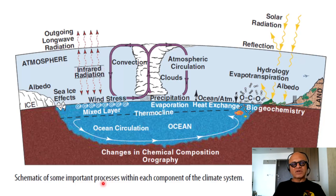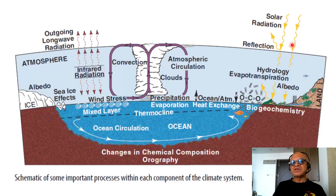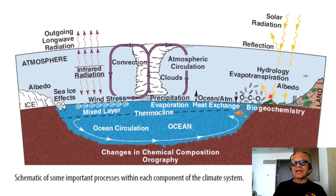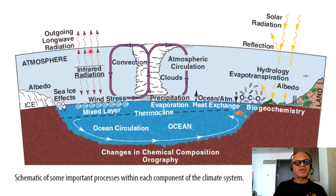Starting with his figure on the schematic of some important processes within each component of the climate system — we have seen this, but here it has a few more details. At the top of the atmosphere, we have incoming solar radiation and albedo creating the 30% loss, and that energy obviously drives evaporation and circulation. We have hydrology, evapotranspiration, albedo, high latitude ice, snow, and sea ice effects which also affect the albedo, and we have the greenhouse effect with radiation going out of the atmosphere and back to the surface.